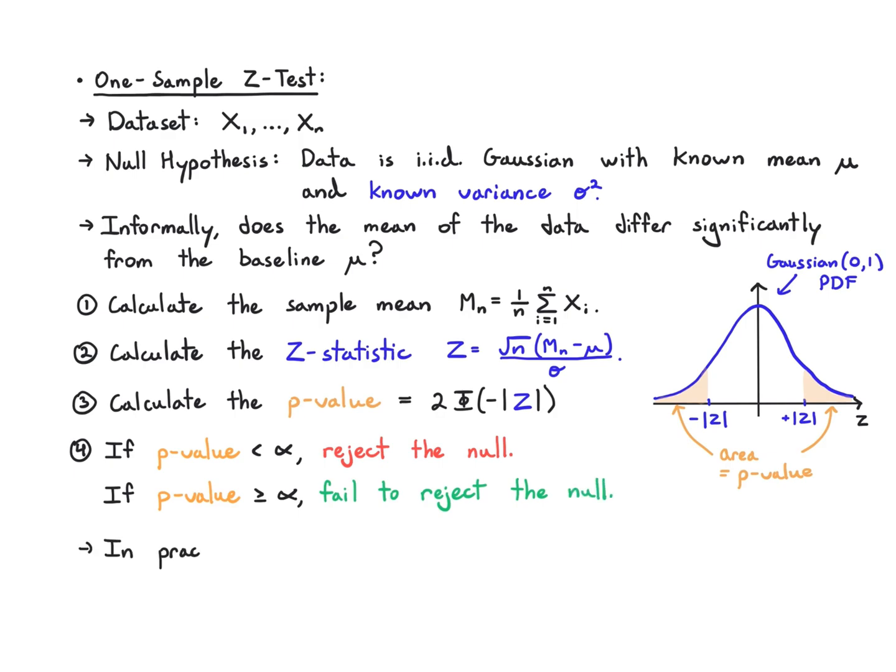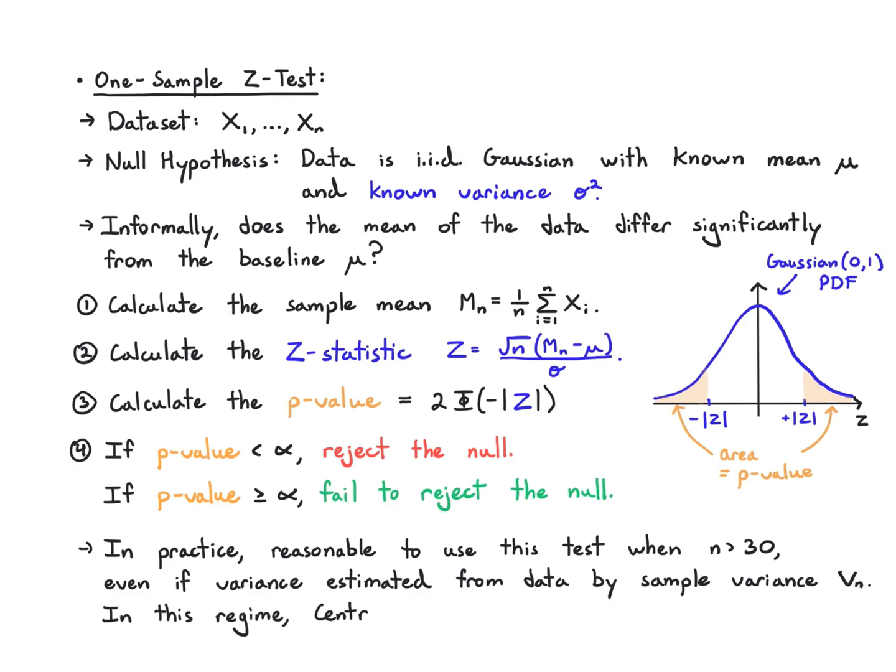In practice, you see people using this test in scenarios where you have about n greater than 30, even if you have to estimate the variance from data. Strictly speaking, there's a different test for that. But the reason is that basically everything converges to Gaussian in this regime if the samples are independent, thanks to the central limit theorem. If you collect 30 or more than 30 independent samples, even if you didn't know they were Gaussian in advance, it's a pretty good idea to use this test. People do it all the time. But we need to know the assumption is this Gaussian assumption.